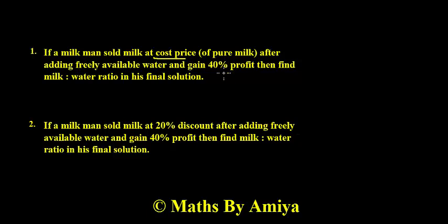Here, at cost price means 40% that is 40 upon 100 is nothing but 2 to 5. So we are looking for milk to water. Milk is 5. Water is 2. So our answer is 5 to 2. I hope it is clear.